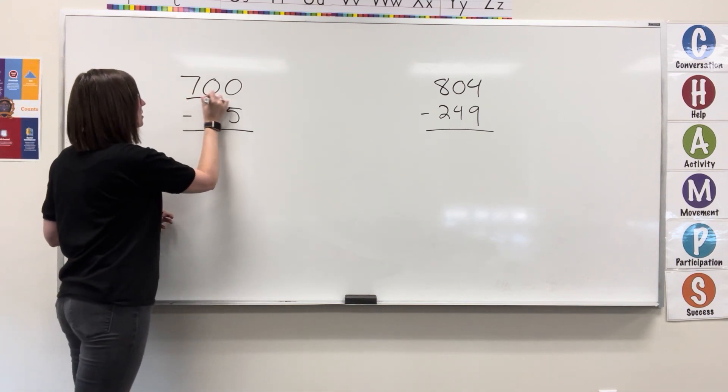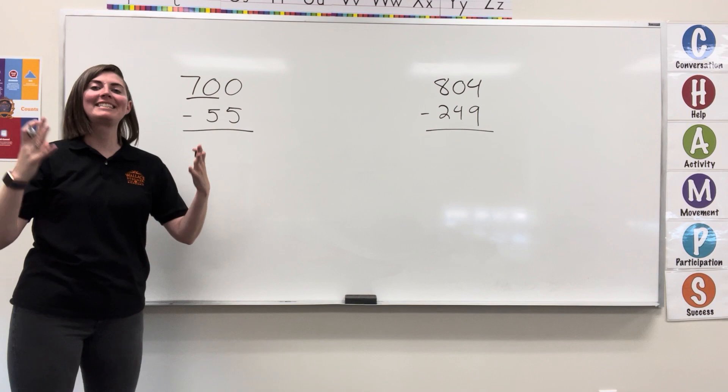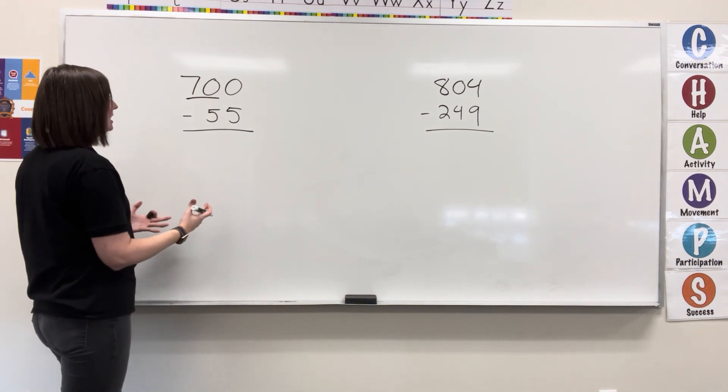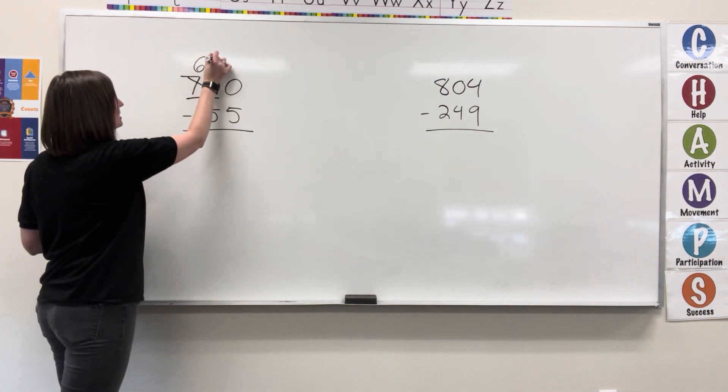I'm going to group into a 70. I'm going to borrow from 70. 70, if I take one 10 from it, is going to become 69.